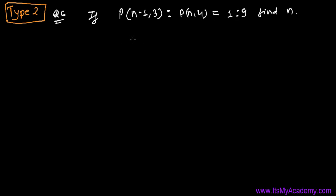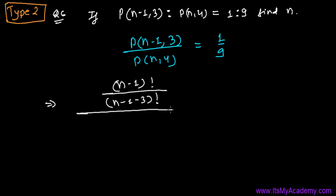Let's do it step by step. P(n-1,3) divided by P(n,4) equals 1 over 9. Now we're going to use the formula of permutation, so it's going to be (n-1)! divided by (n-1-3)! and n! divided by (n-4)!. That's going to equal 1 over 9.